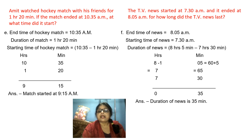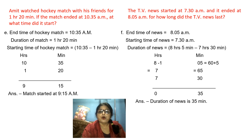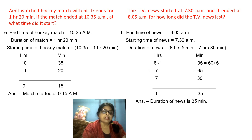Next one: the TV news started at 7:30 a.m. and it ended at 8:05 a.m. How long did the TV news last? Write down 8 hours 5 minutes and subtract 7 hours 30 minutes. From 5 minutes you can't subtract 30, so you borrow 1 hour and you get 65 minutes. Now subtract 30 from 65 and you get 35 minutes. And 7 hours minus 7 hours is 0. So the duration of the news is 35 minutes.